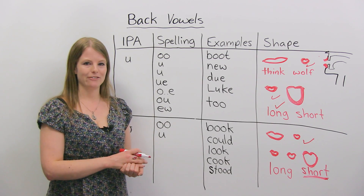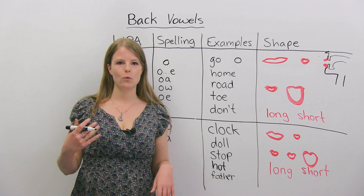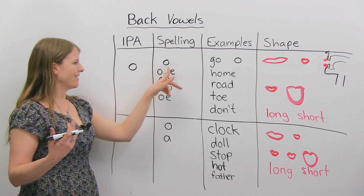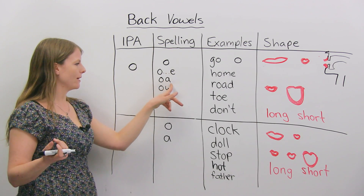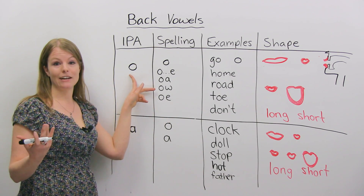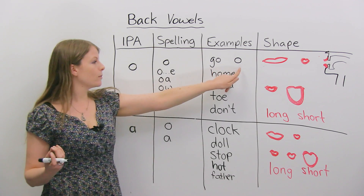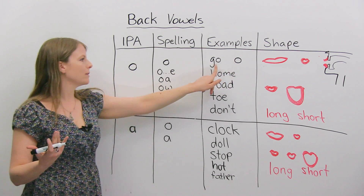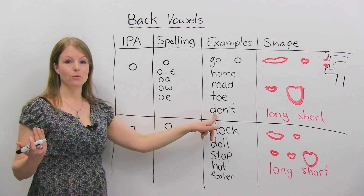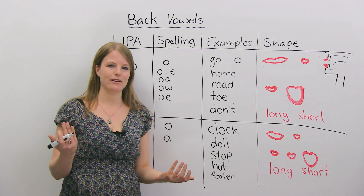Now let's look at some more back vowel sounds. The next back vowel we're going to learn is "O". It might be spelled as the letter O, it might be O-E, O-A, O-W, or O-E. There are many different spellings for this, and the IPA symbol is an O. Examples of this sound: the letter O in the alphabet, go, home, road, tow, don't, and no. This is a very common sound — it might even exist in your language.